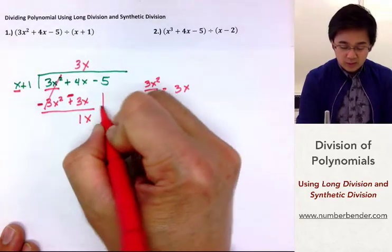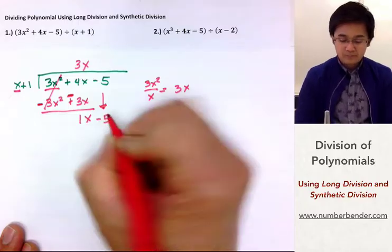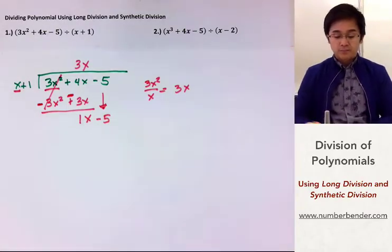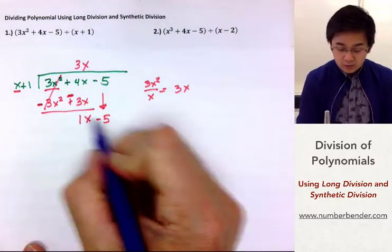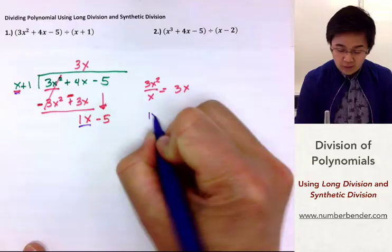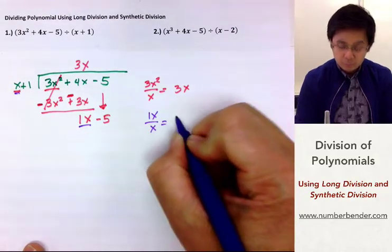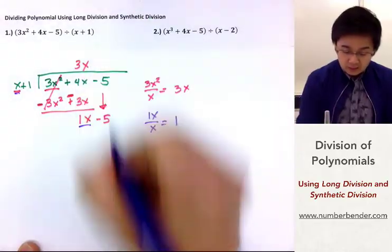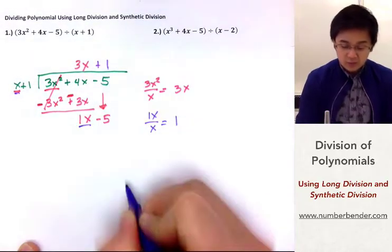And then we will bring down negative 5. Just like what we did on our first set, we're now going to divide 1x by x. So, 1x divided by x is equal to 1. And you're going to write it out in line with the constant — so I have positive 1 over here.